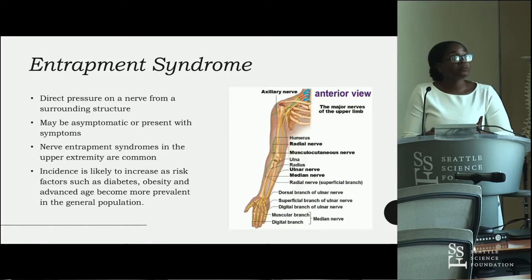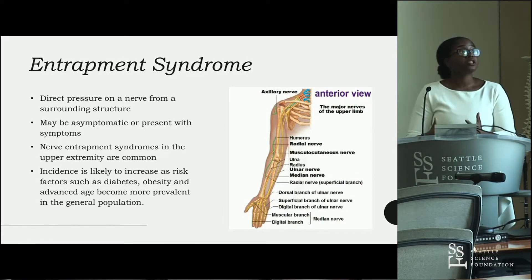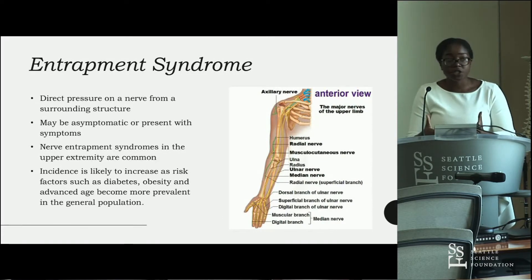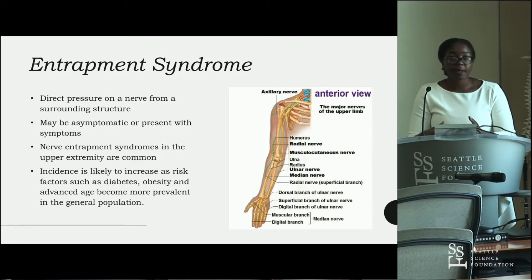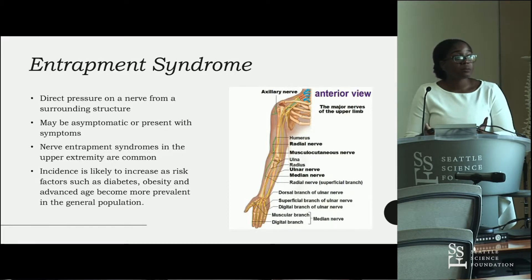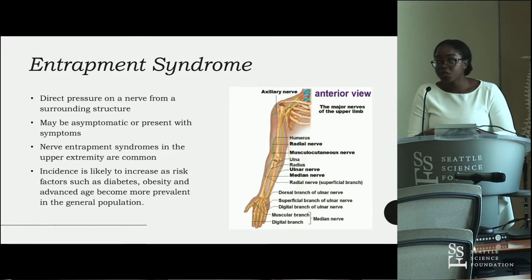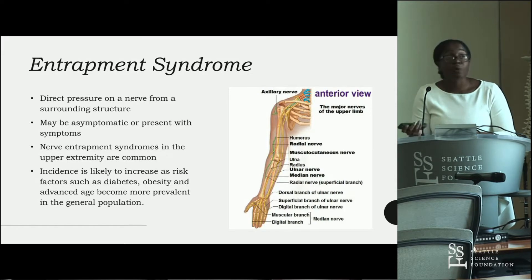Entrapment syndrome is compression or direct pressure on a nerve from a surrounding structure. It may be asymptomatic or it can present with symptoms. Nerve entrapment syndromes are very common in the upper limb, and the incidence is likely to increase as risk factors such as age, diabetes, and obesity become more prevalent in the general population.